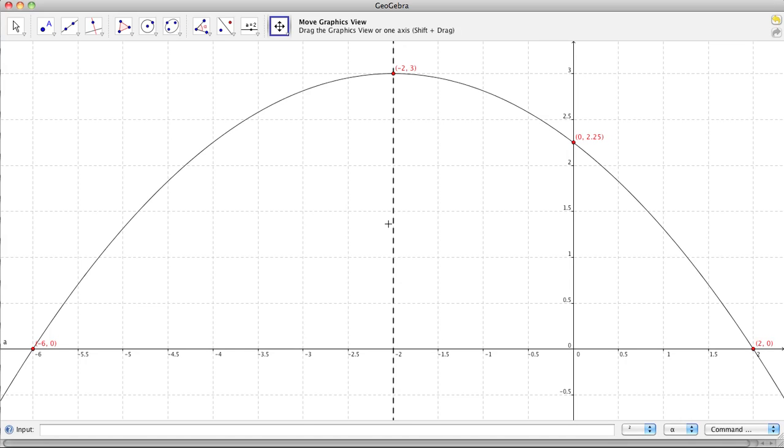Over here to the far left we find that other x-intercept to be negative 6, 0. We also talked about the axis of symmetry, and we see the axis of symmetry is here at x equals negative 2, to create a vertical line.